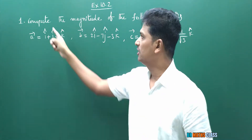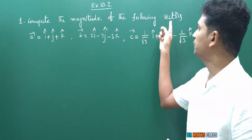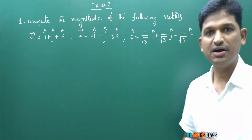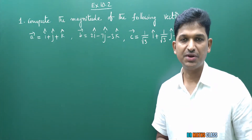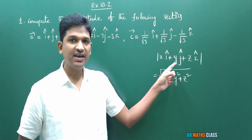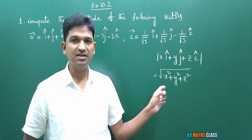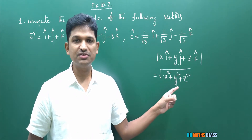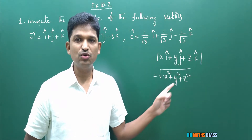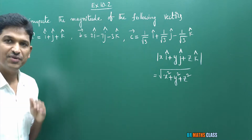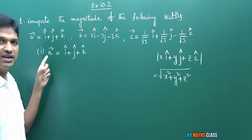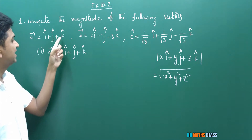The first question: compute the magnitudes of the following vectors — the given three vectors a bar, b bar, c bar. We need to calculate the magnitudes of these vectors. In theory, the magnitude of x·i cap + y·j cap + z·k cap is the square root of x² + y² + z². First, I will calculate the magnitude of vector a bar, which is i cap + j cap + k cap.